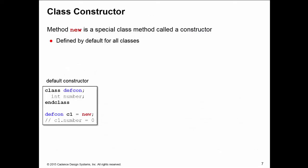Let's have a closer look at the constructor of a class now. The method new is a special class method and we call this the constructor, and we have this defined by default for all of our classes. In our first example, defcon, we call the constructor of the class to create the class instance, and when we do that, number will have an initial value according to its data type. It's an int which is a two-state type, so c1.number will have a starting value of zero.